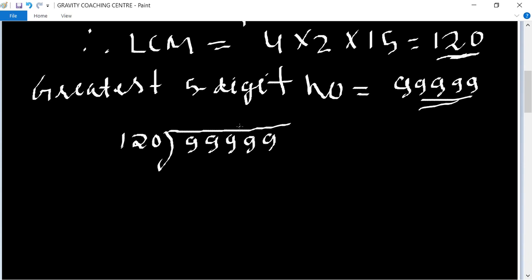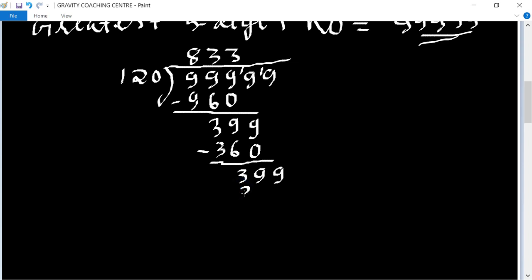So first we take the first 3 numbers. The table of 8 times 120 is 960. After subtracting 999 we get 39. Bring down the next digit, so table of 3 times 120 is 360.